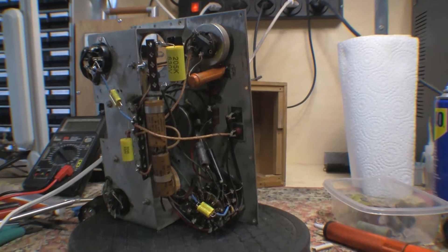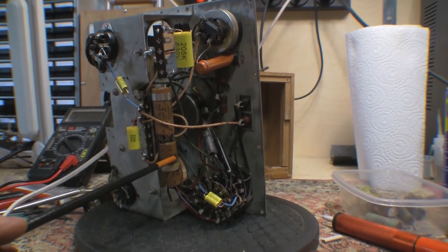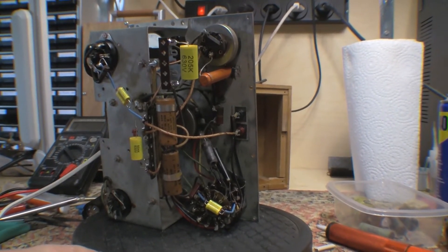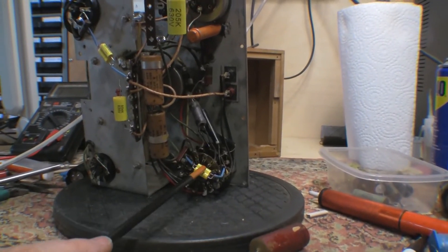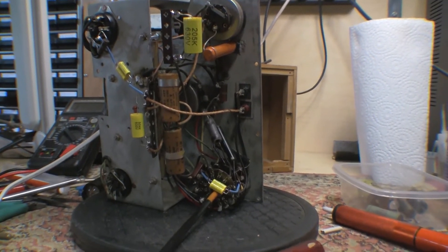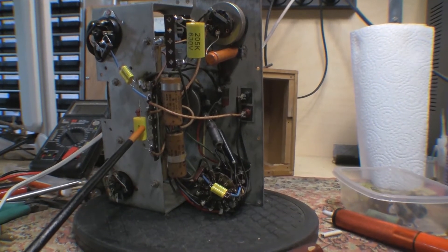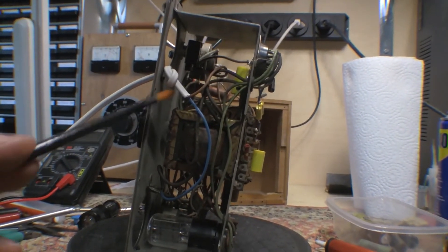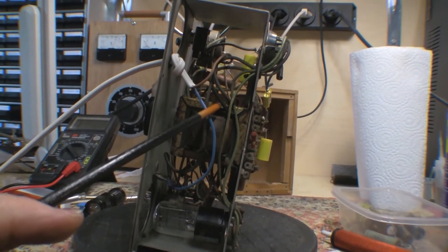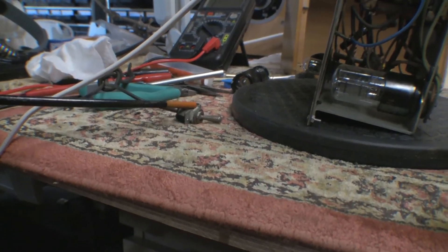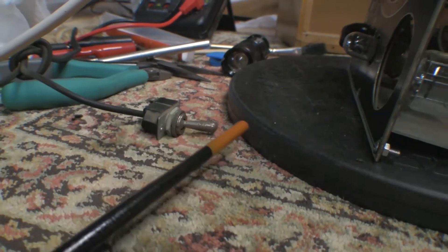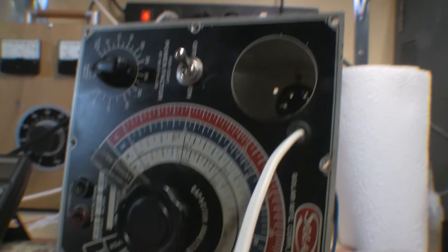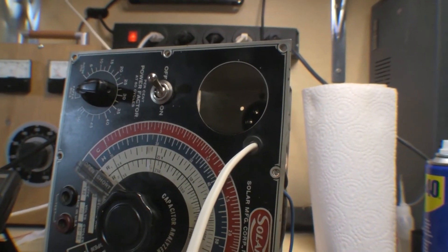Right, so I've replaced the caps except these two electrolytics because they don't have the right values and since they're supposed to be close tolerance, I'll wait and order up some of the right values. Obviously, the 0.02s I didn't have, so I just used paralleled 0.01s. I had a two microfarad one and a half microfarad, so that's good. A couple of resistors I checked seem to be okay. I've replaced the power cord. Unfortunately, I only had white but hey, it'll do. And I replaced the on-off switch because the chrome coating and everything is all ruined. I had a couple spare so I put a new one in and just generally gave it a bit of a tidy up.